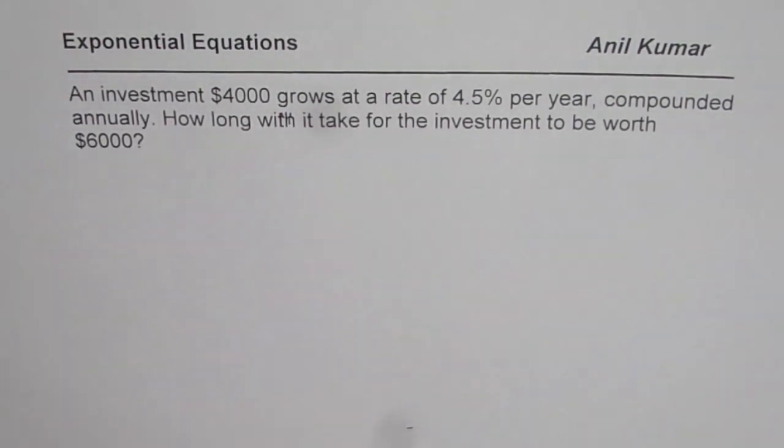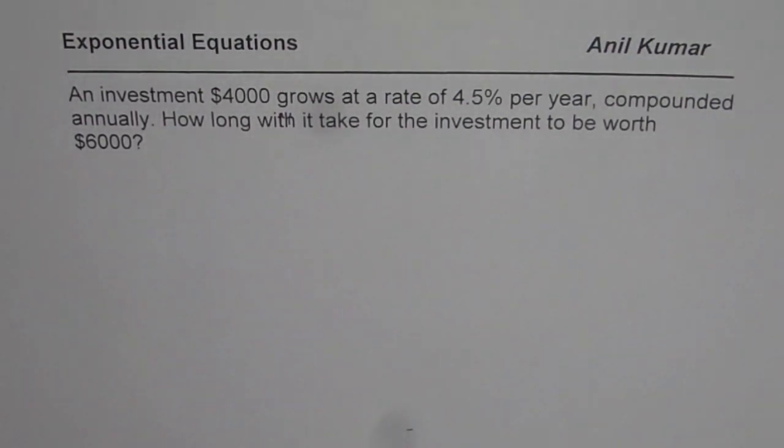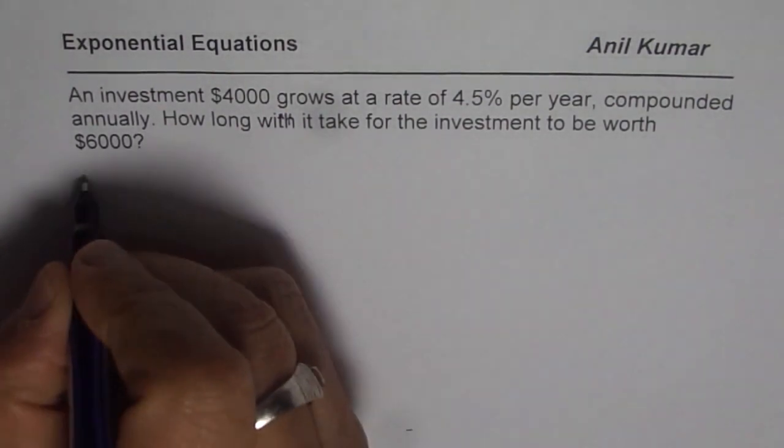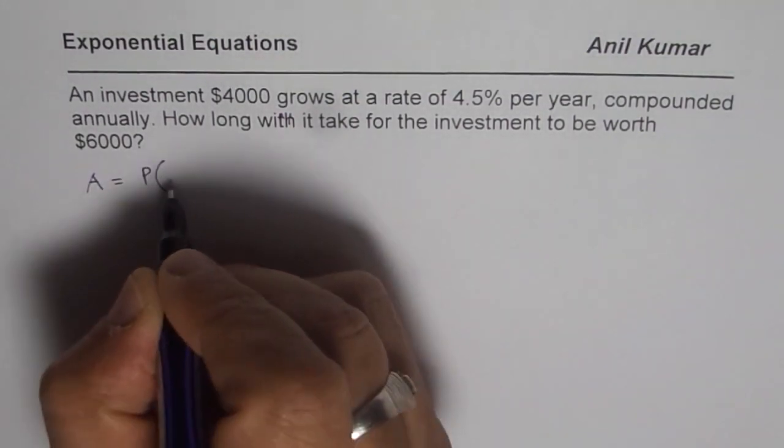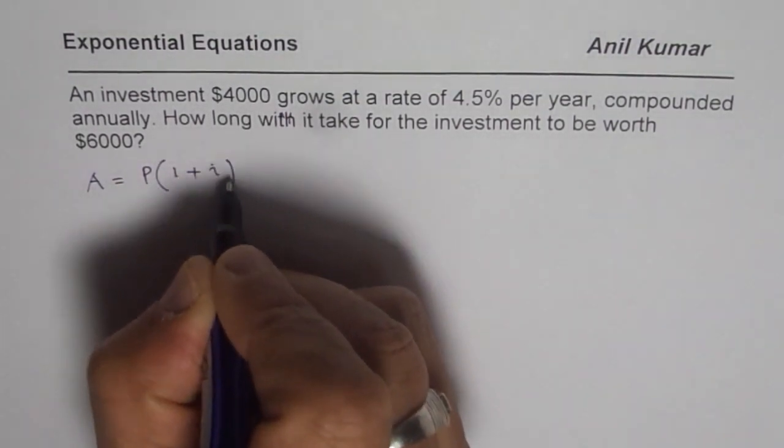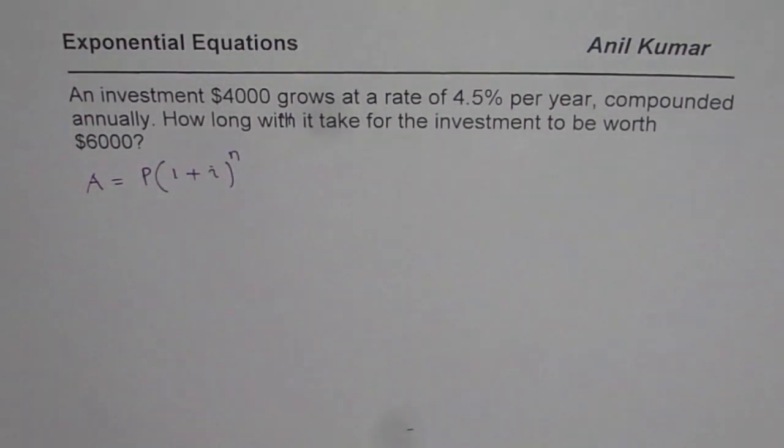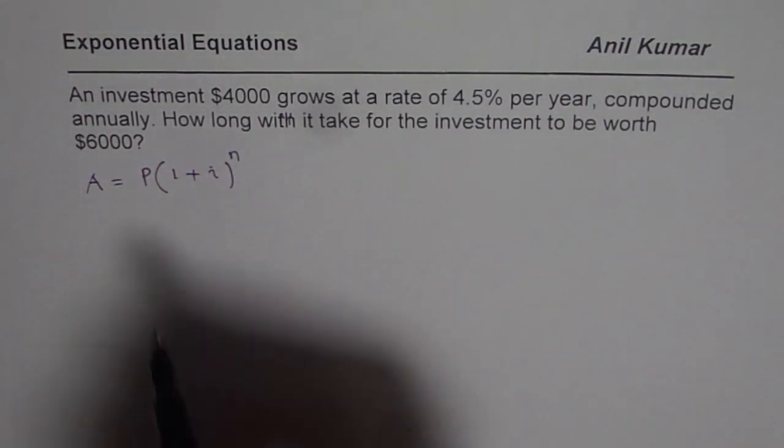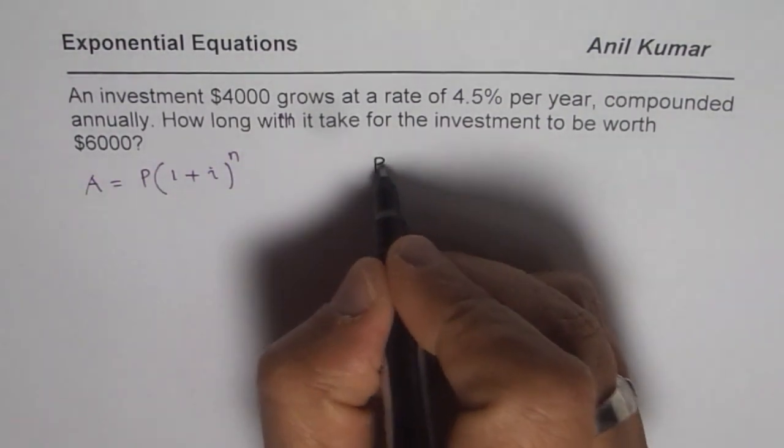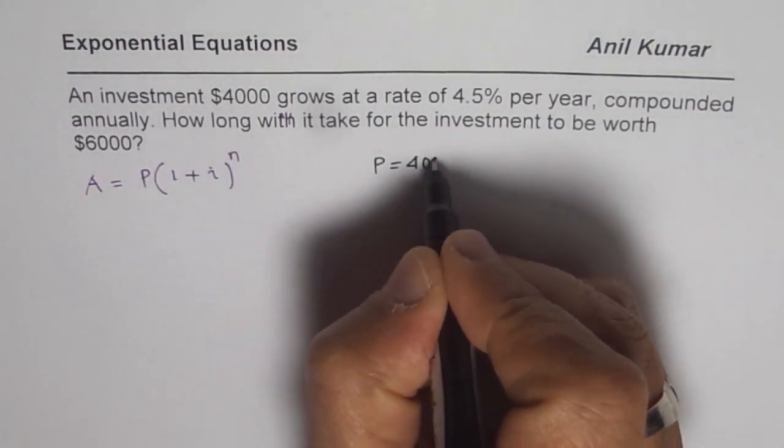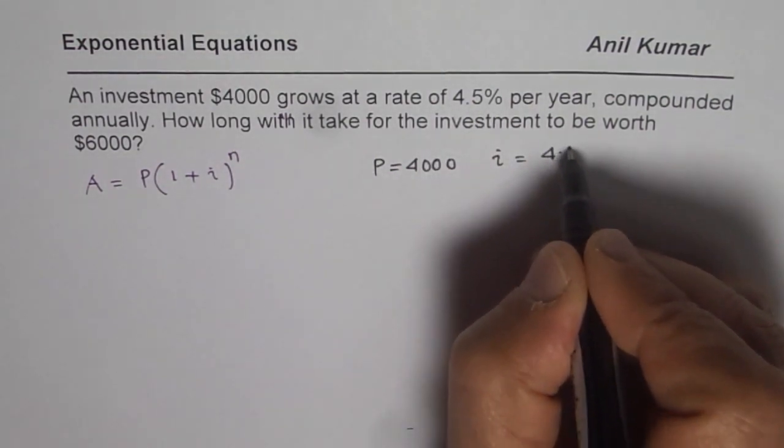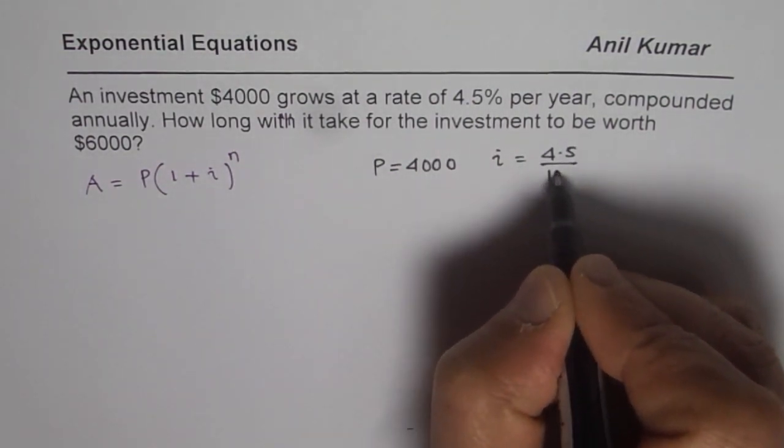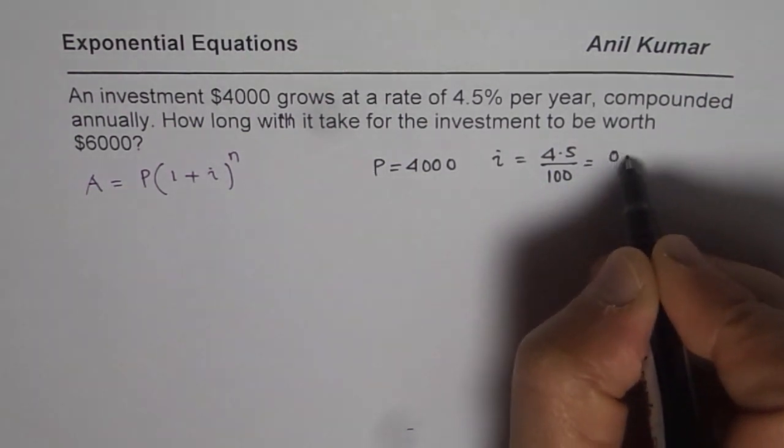So how long will it take for the investment to be worth $6000? I hope you remember the formula: amount equals principal amount times (1 plus interest rate) to the power of n. Now in this particular case we are given principal amount P equals $4000, interest rate i is 4.5% - that means 4.5 divided by 100 which could be written as 0.045.